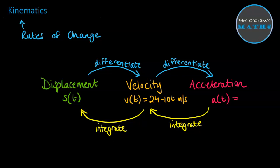So the acceleration would then be minus 10 meters per second squared. And we could integrate it to get the displacement function. So integrating that, we get 24t minus 10t squared over 2. So that becomes 5t squared plus c.